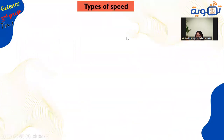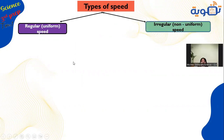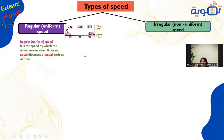There are two types of speed: uniform or regular speed, and irregular or non-uniform speed. Uniform speed is when the object covers equal distances in equal periods of time. For example, Car A covers 100 meters every 10 seconds. Speed equals distance over time: 100 over 10 equals 10 m/s — the value is constant at each interval.